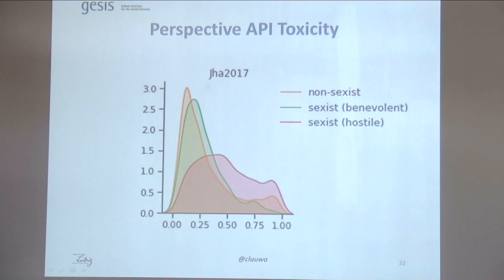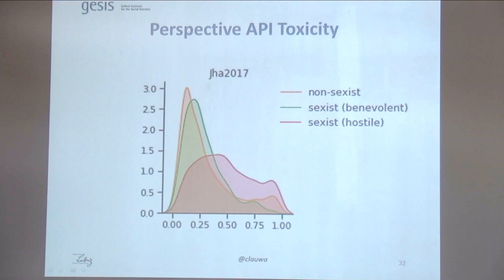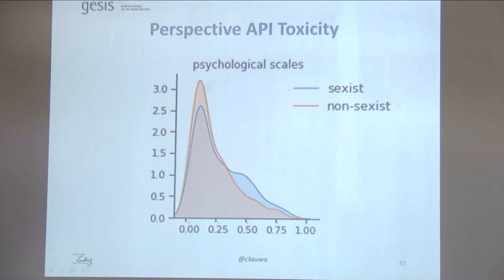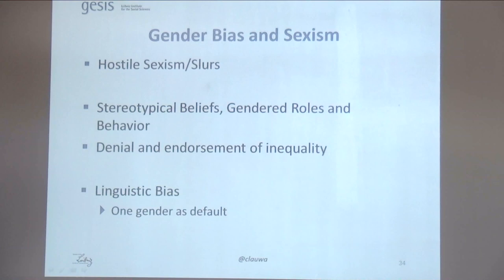Out of curiosity, we also tested the Perspective API from Google. Although it's a black box and not really made for detecting sexism, one of the dimensions it returns is a sexism score. Google has probably trained on a huge dataset, so we wanted to see how well this black box performs. Looking at the Toxicity scores, they might help distinguish hostile sexist sentences from non-sexist sentences, but not really between benevolent sexist sentences and non-sexist ones. When looking at toxicity scores for the psychological scales, they match almost perfectly, so the toxicity score will not help you differentiate.